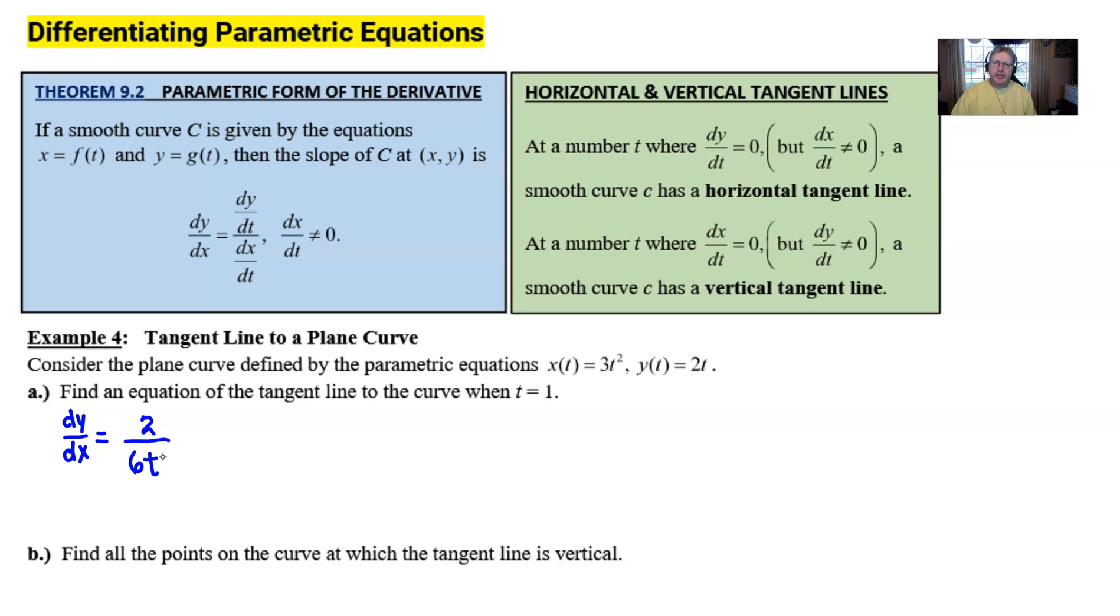That's going to be the general form for our derivative, but we want this derivative very specifically in this problem at time equal 1. So I can go ahead and denote that as such. I can plug 1 in for t, and then of course I see that my slope can reduce to 1/3. So I'm certainly on my way.